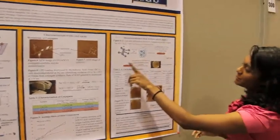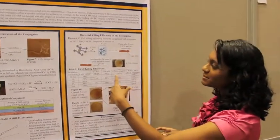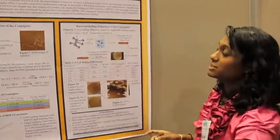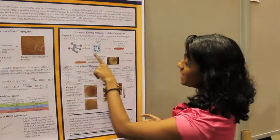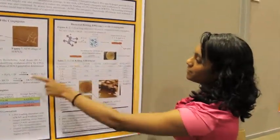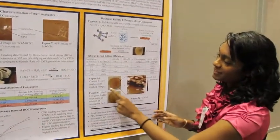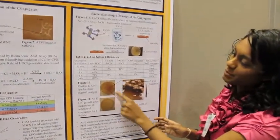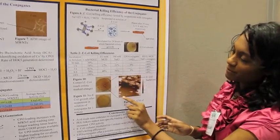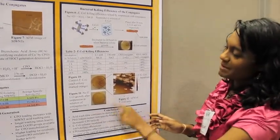The next step was to see what their bacterial killing efficiency was by suspending them in solutions of E. coli. We found that whenever you combine all these components, within one minute, the killing efficiency is 100%. So this is the control with all the colonies in orange, and then this is after a minute.